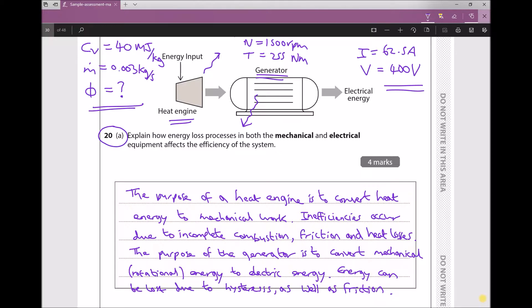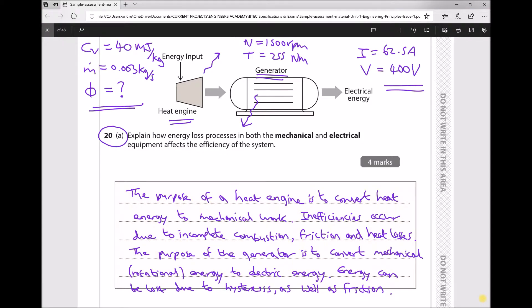The purpose of a heat engine is to convert heat energy to mechanical work. Inefficiencies occur due to incomplete combustion, friction, and heat losses. The purpose of the generator is to convert mechanical or rotational energy to electric energy. Energy can be lost due to hysteresis as well as friction. So if we move on to part B.